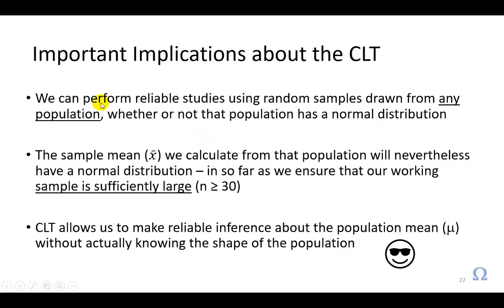So importantly, we can perform reliable studies using random samples drawn from any population. It doesn't matter how the population is shaped, normal or non-normal. All we've got to do is make sure that we use large samples, because the sampling distribution of x-bar will be sure to be approximately normal. And so this central limit theorem, which allows us to do this, enables us to make valid and reliable inference about the population mean, and as you're about to find out shortly, the population proportion without actually knowing the shape of the underlying population. And in my opinion, this is so cool. All right. Hope you enjoyed that.